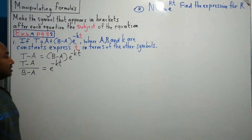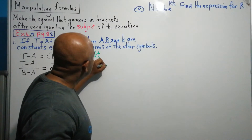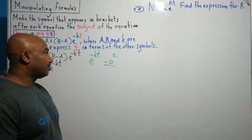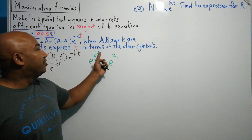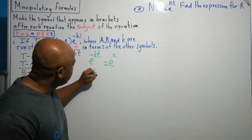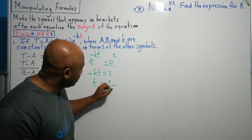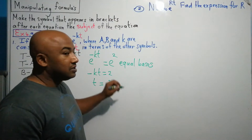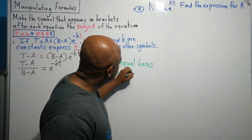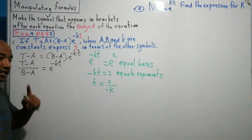Now we need to work out T, and T is the exponent. If we had an example like E to the power minus KT equal to E to the power 2, this would be an exponential equation where the bases are equal, so you equate the exponents: minus KT equals 2, and therefore T equals 2 divided by minus K. So when you have equal bases, you equate the exponents.